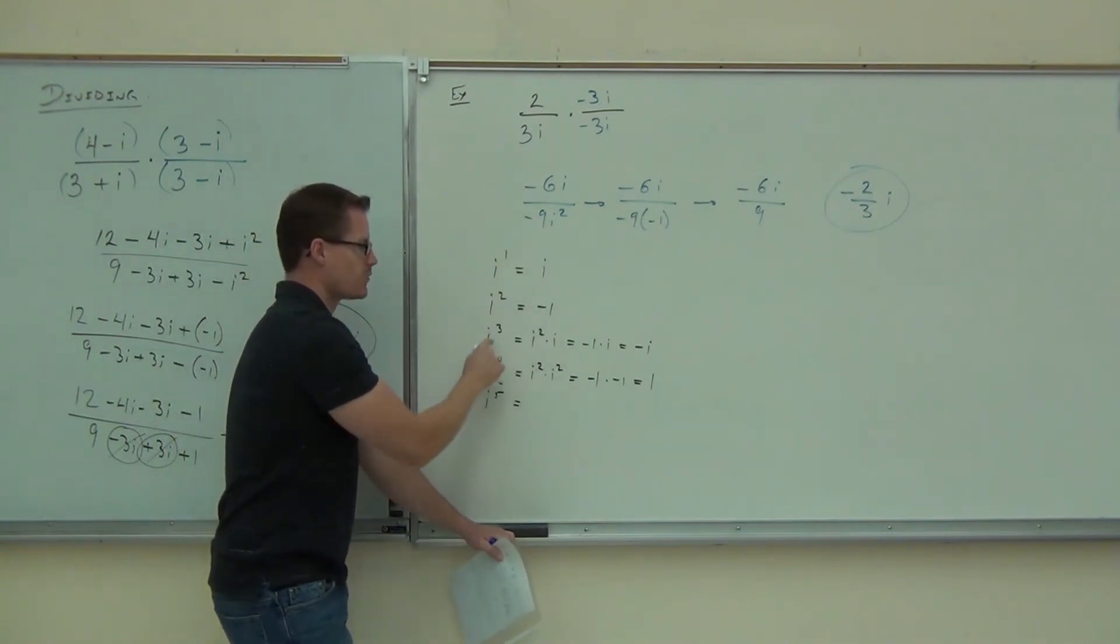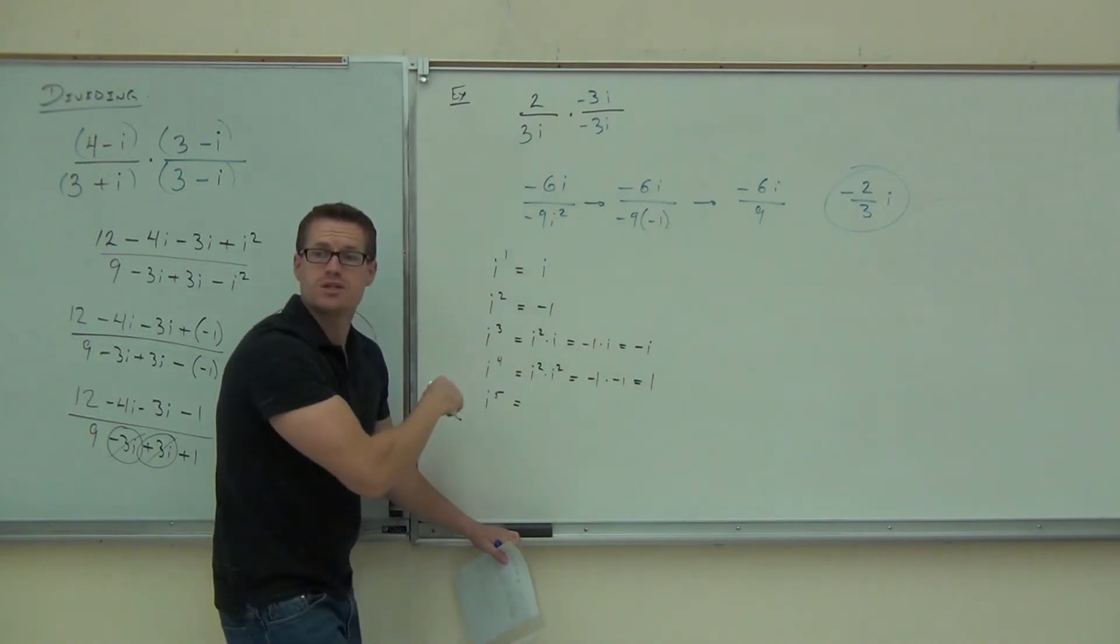i is i. i squared is negative one. i to the cube is negative i. i to the fourth is one. How much is i to the fifth?